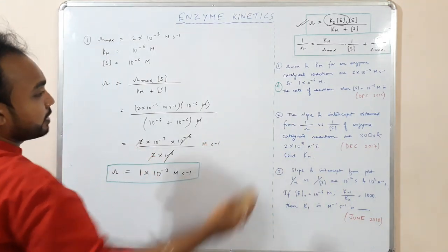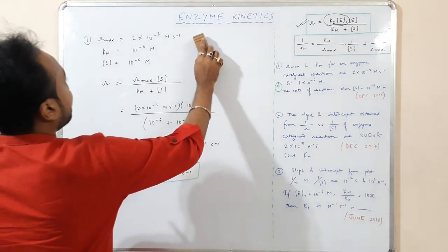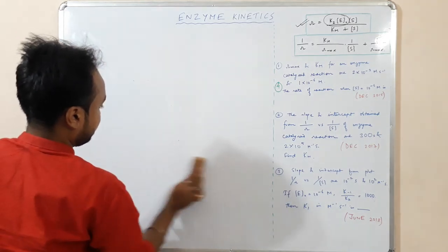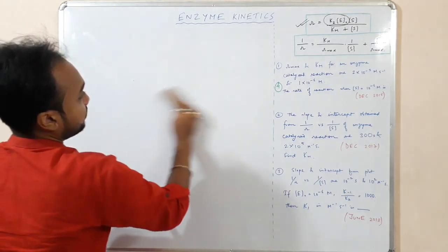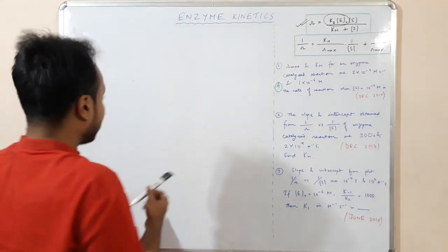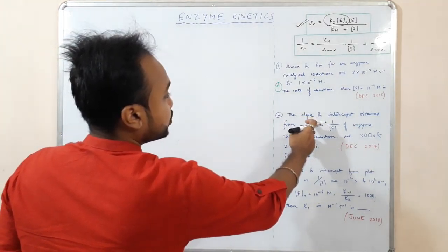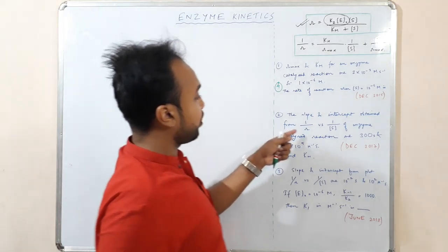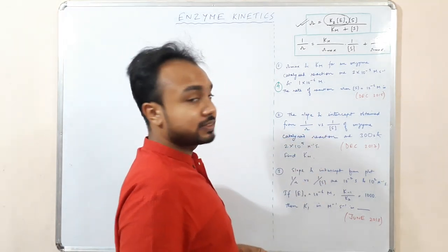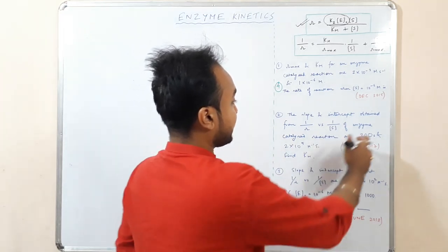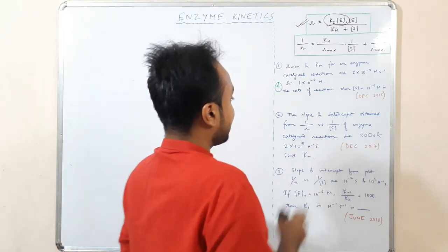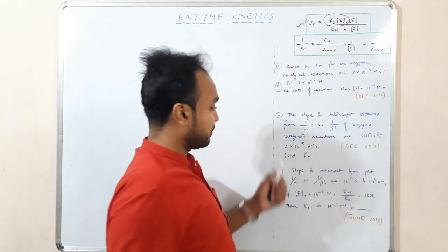The second numerical: the slope and intercept obtained from the plot of 1/R versus 1/S of an enzyme-catalyzed reaction are 300 seconds and 2×10⁵ mol⁻¹·s respectively. We are given the slope and intercept values and need to find Km.